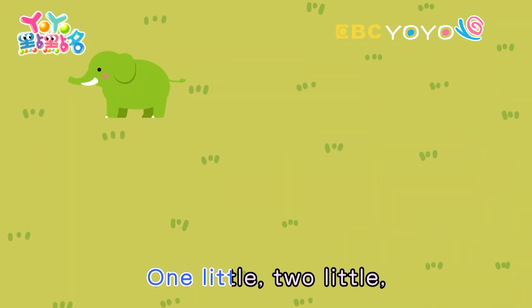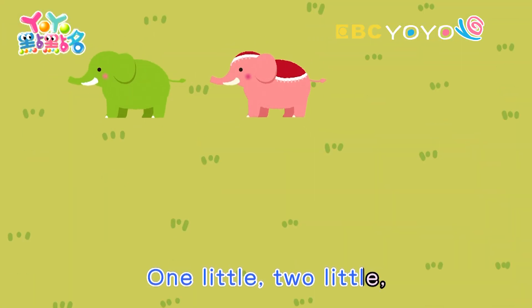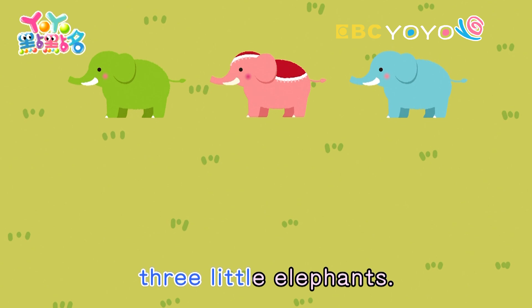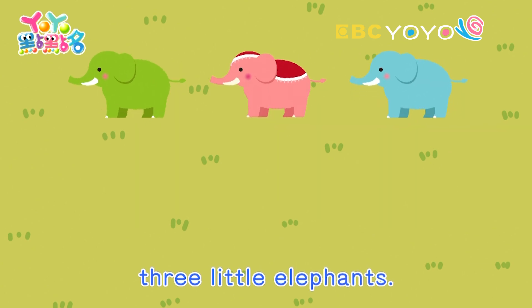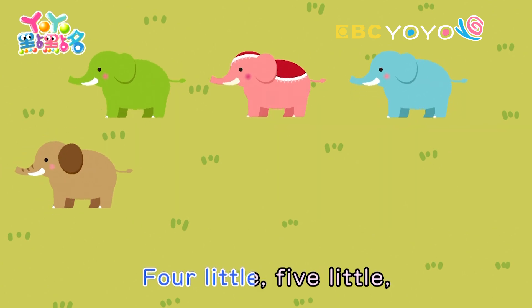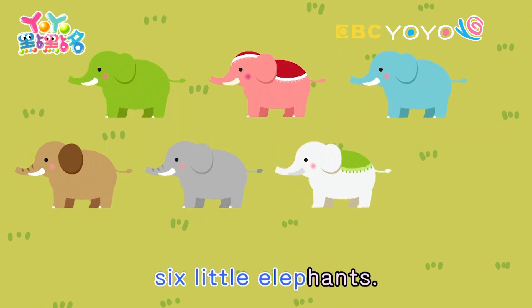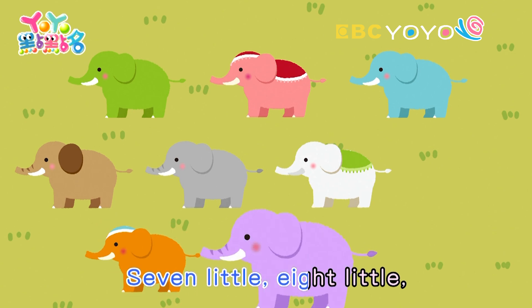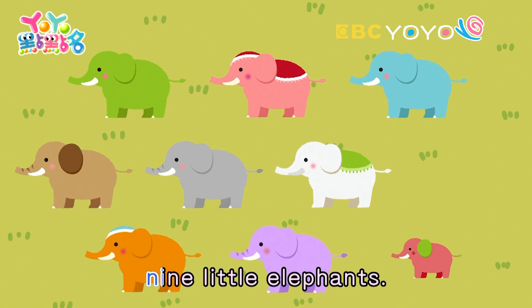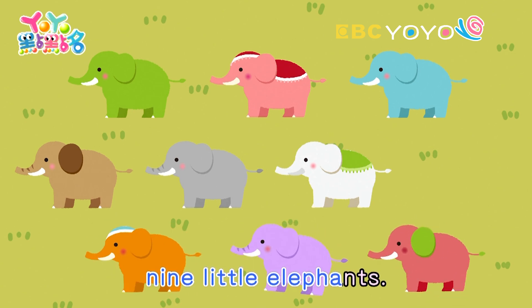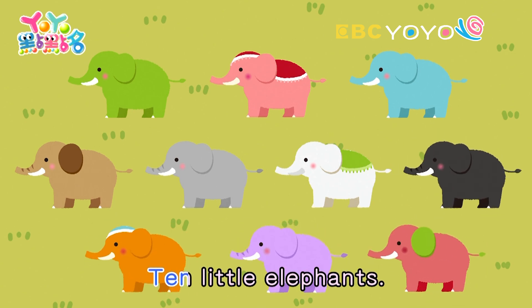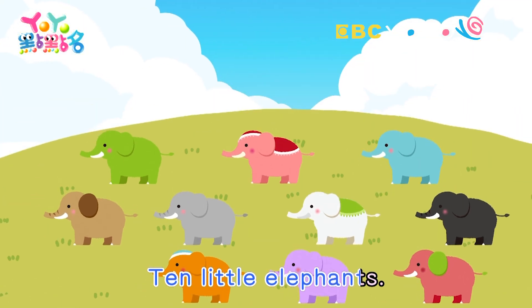One little, two little, three little elephants. Four little, five little, six little elephants. Seven little, eight little, nine little elephants. Ten little elephants.